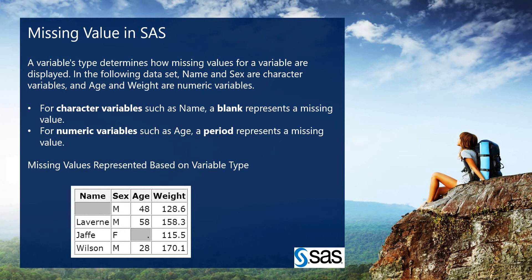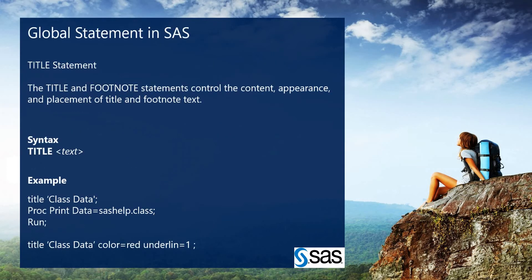Next is missing values in SAS. A variable's data type determines how missing values are displayed. For character variables such as name, a missing value is represented with a blank. For numeric variables, a missing value is represented with a period or dot.